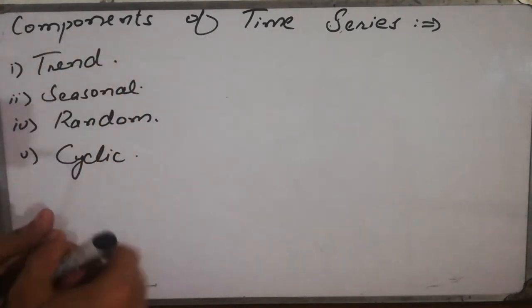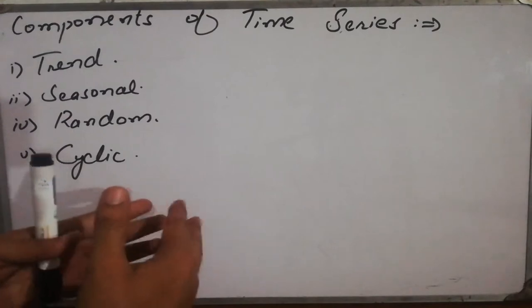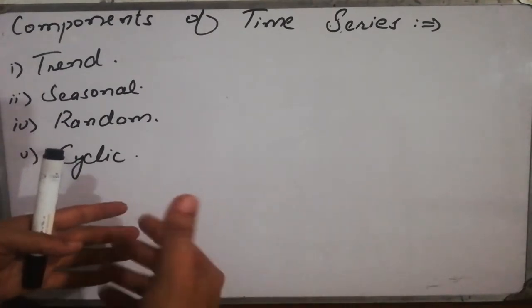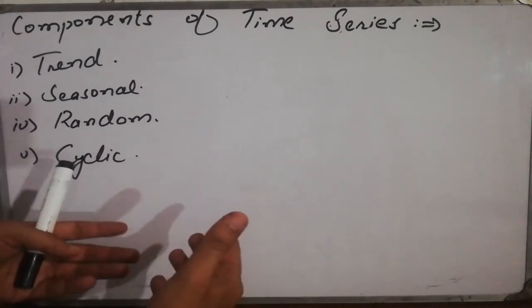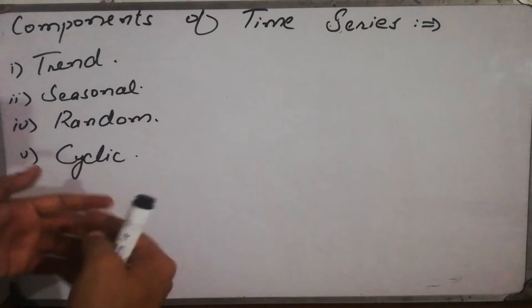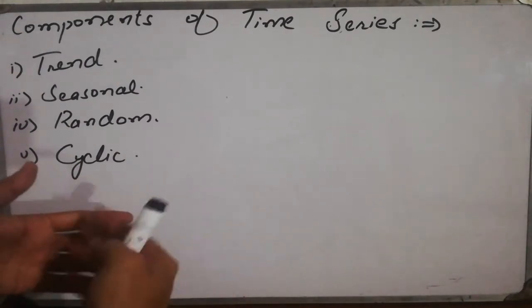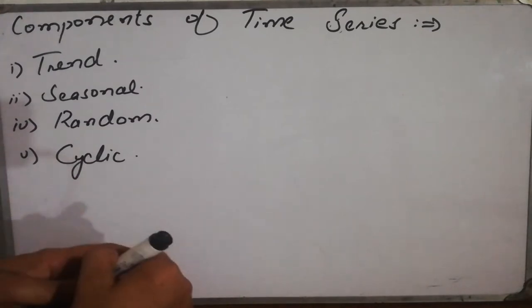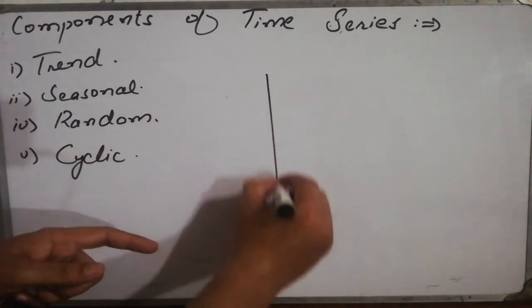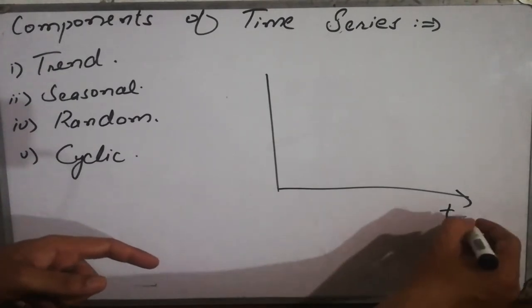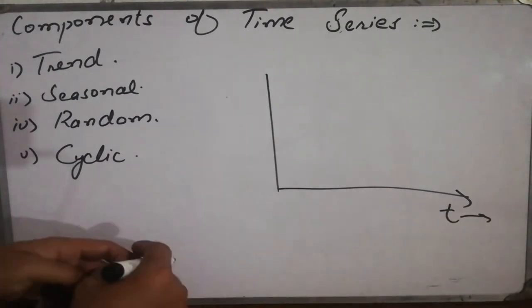The first one is trend. The first thing about the trend is that it is for a long period or a large tenure, it might be for five years, ten years. And it changes whenever the population changes or it changes with the customs or a culture changes, then the trend changes.